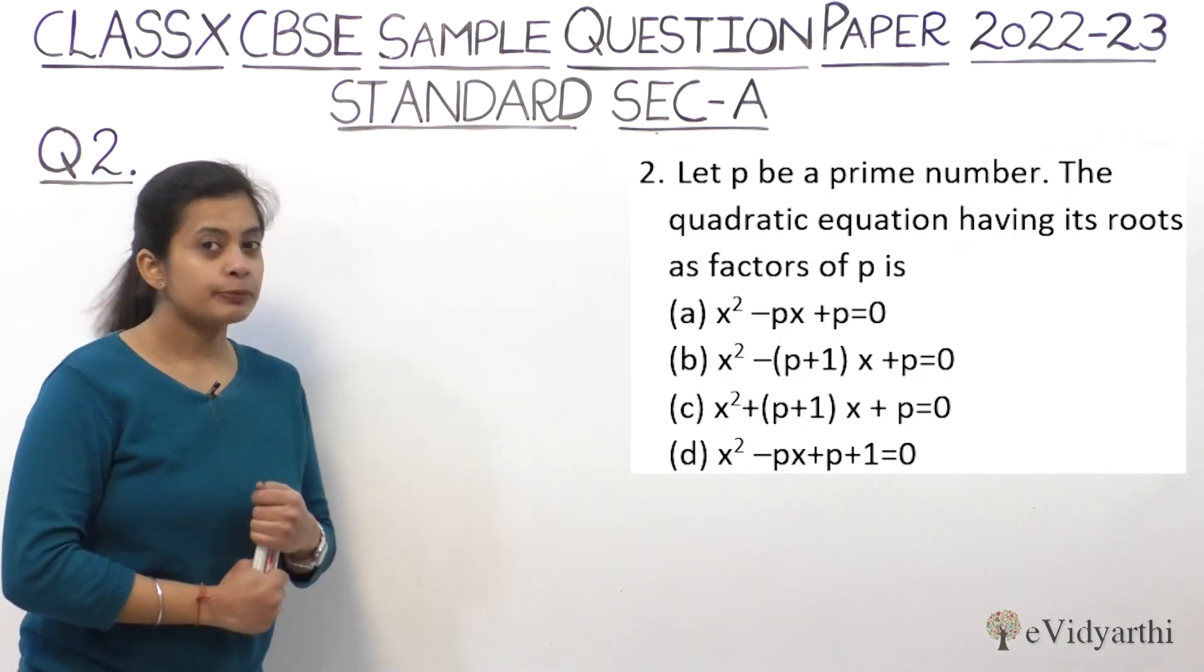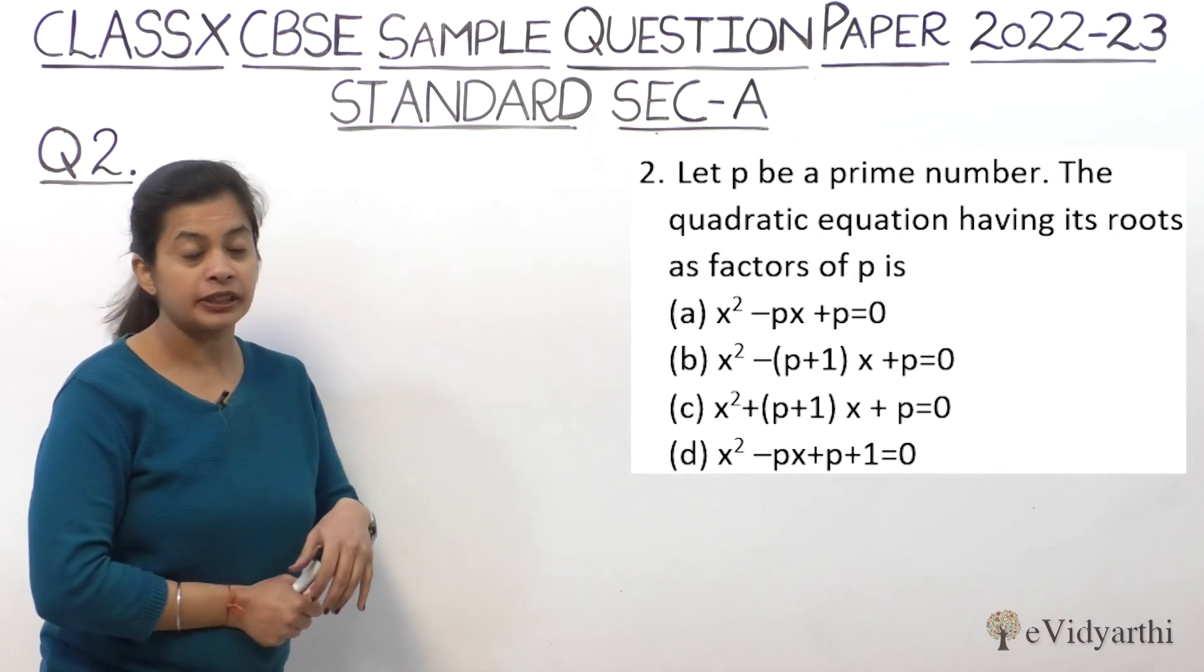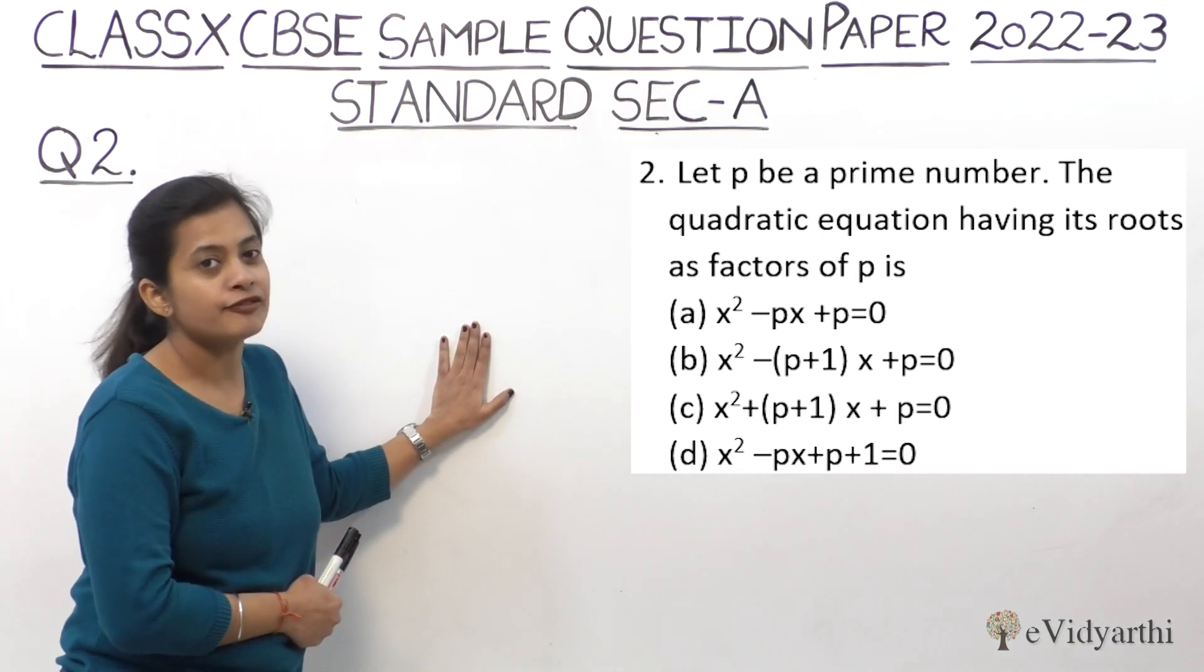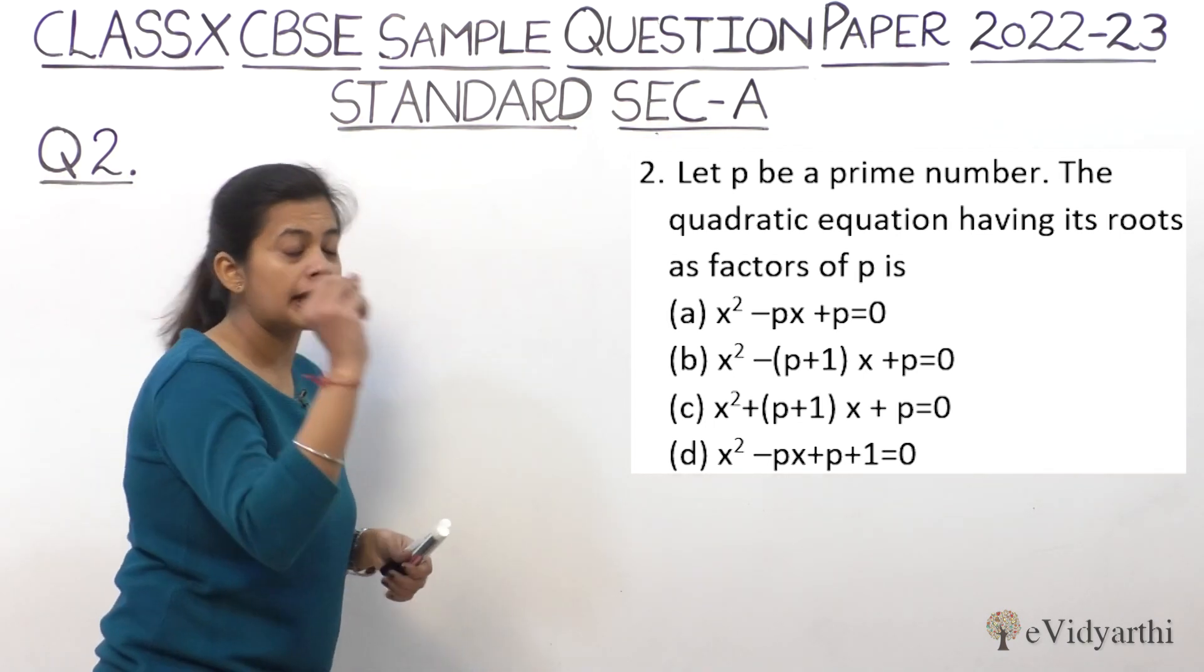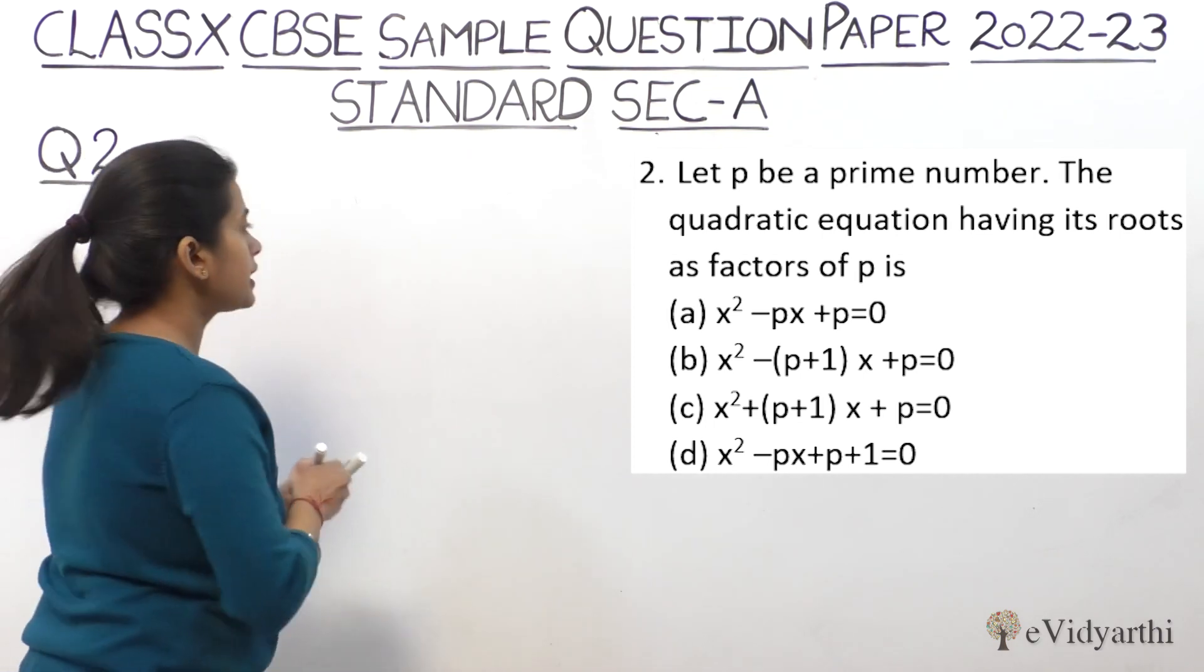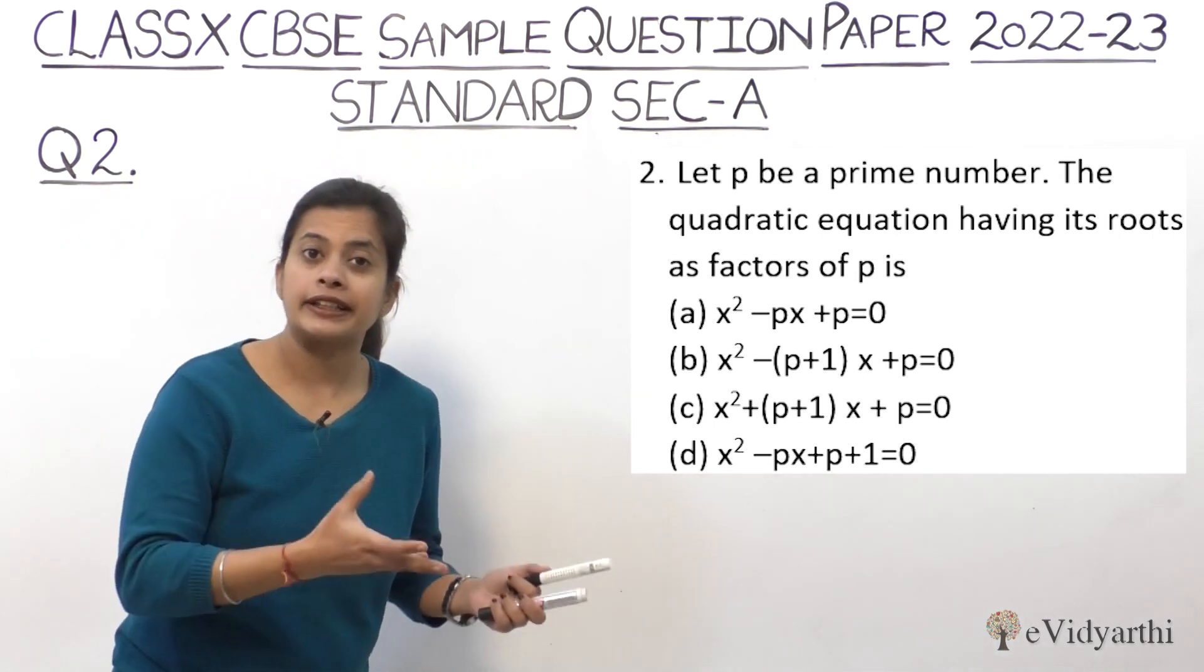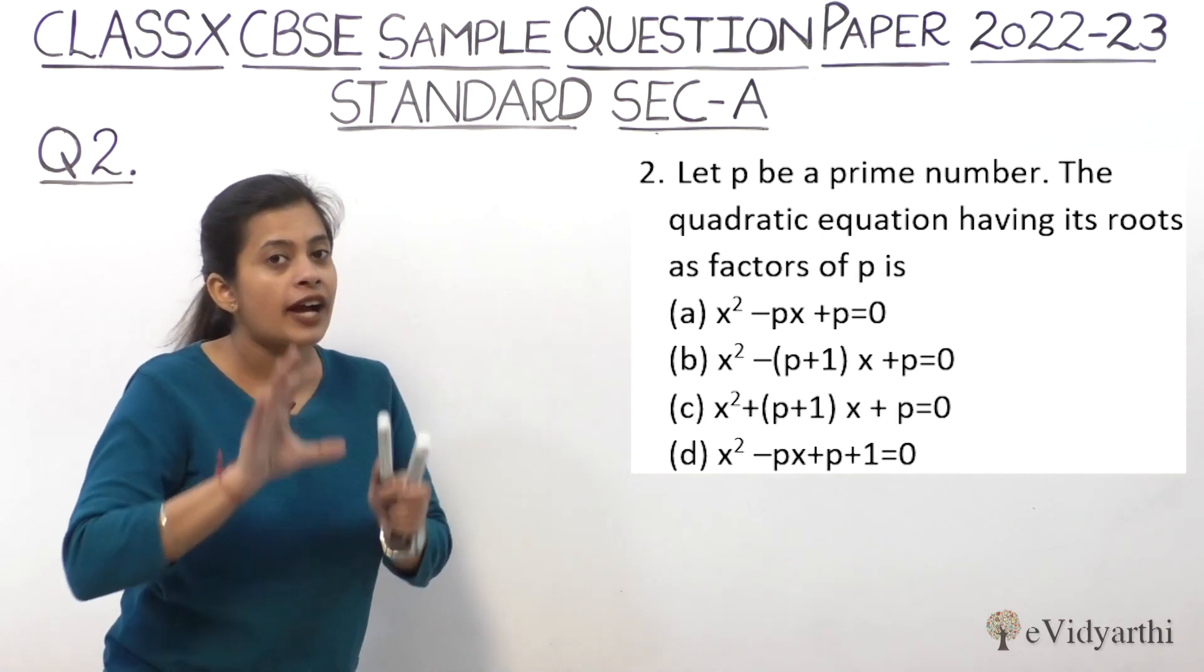Let p be a prime number. We need to find the quadratic equation where the roots of the equation are the factors of p. So the interesting part of this question is that the roots are the factors of p. We all know the general form of a quadratic equation.